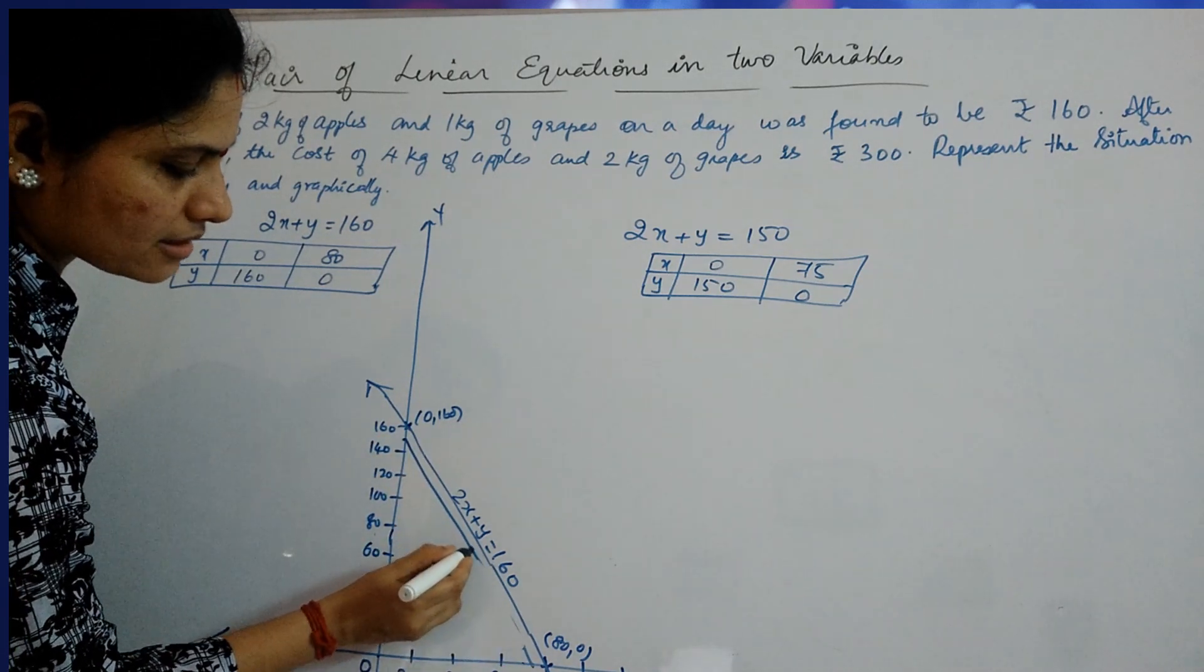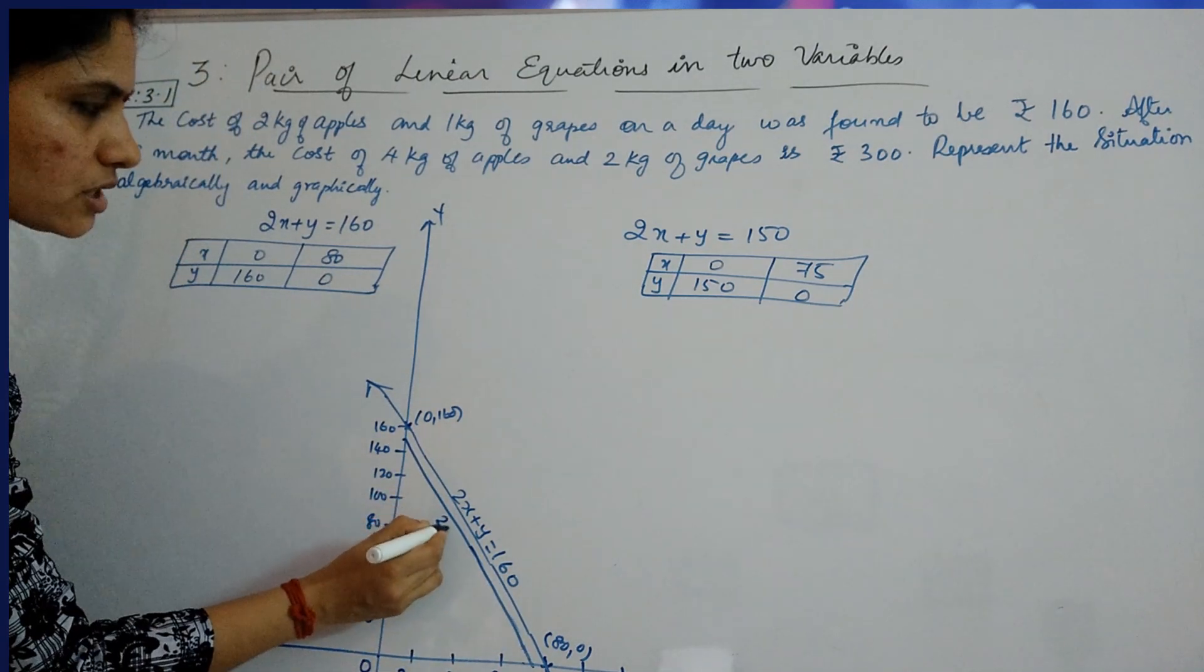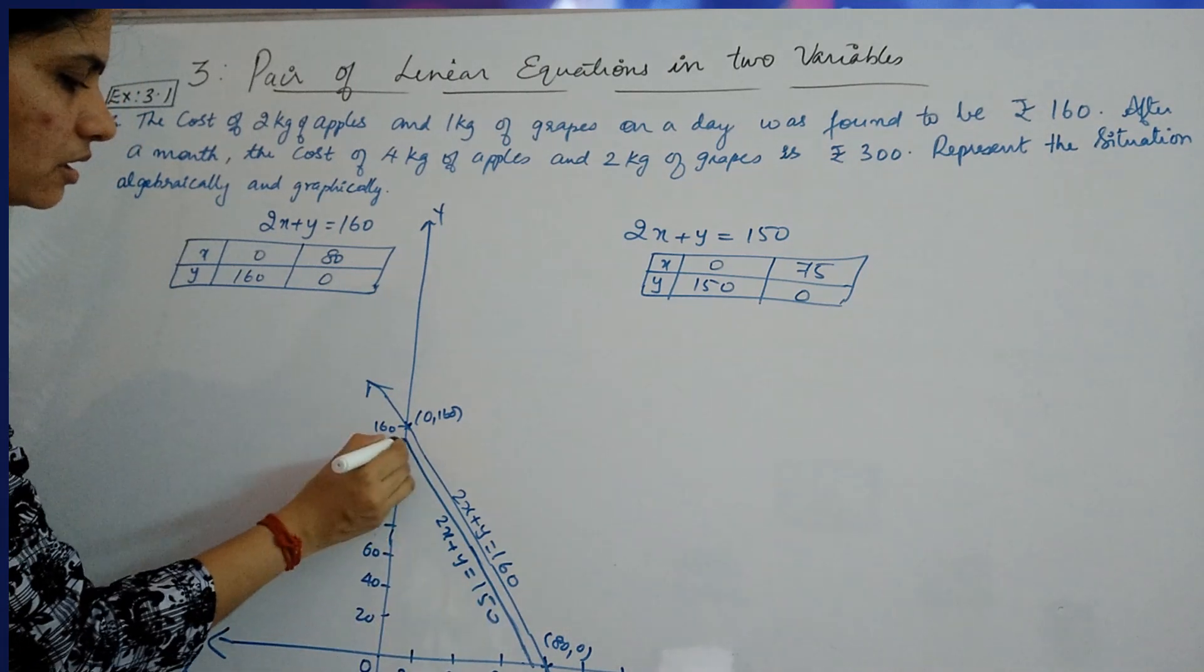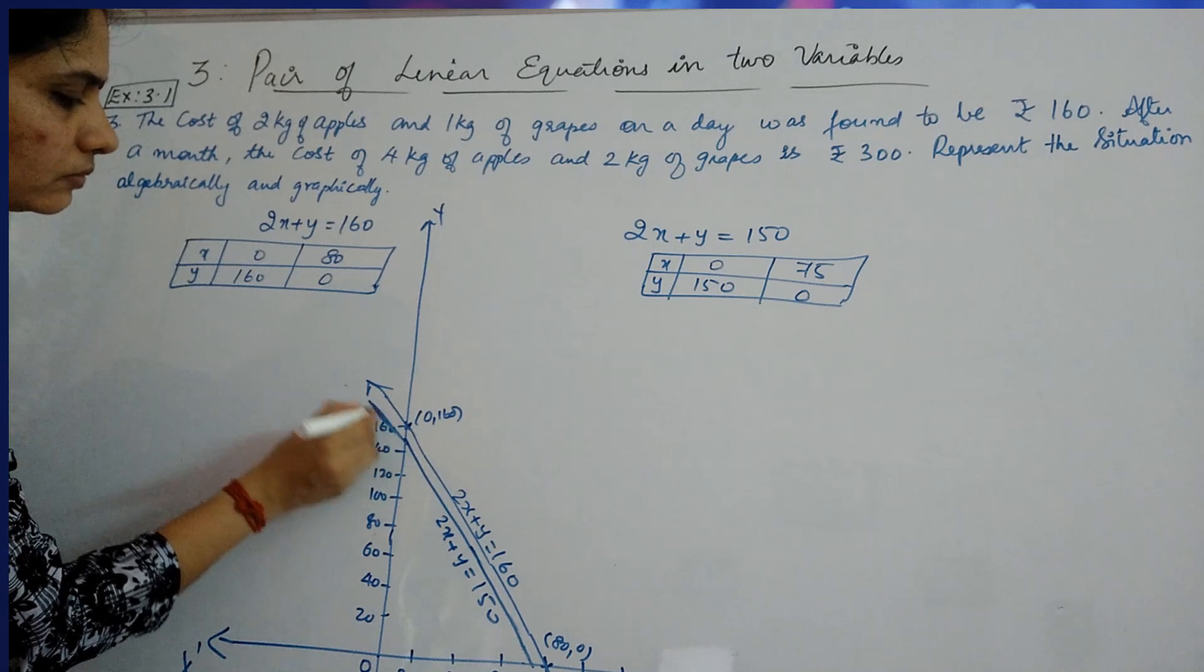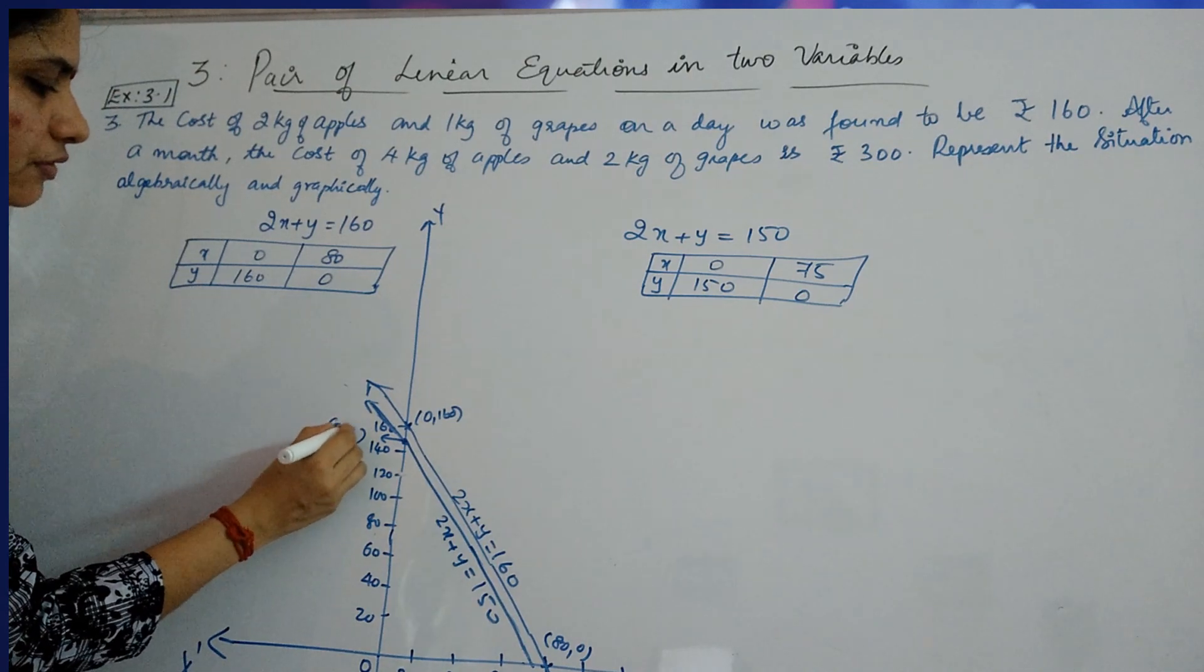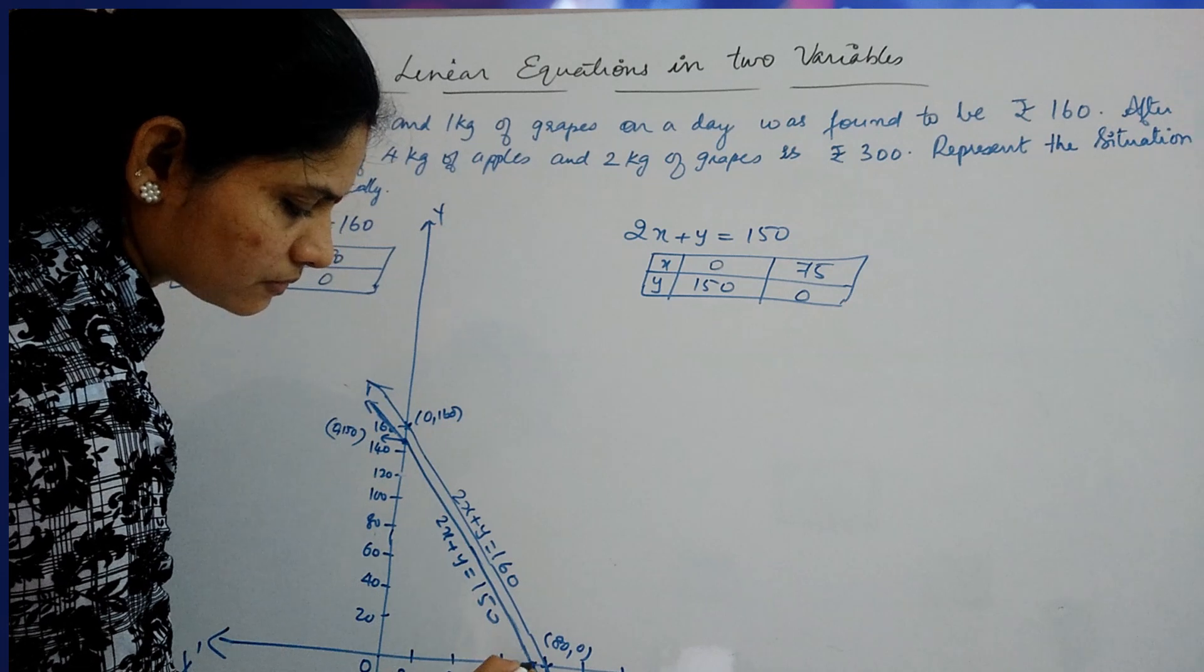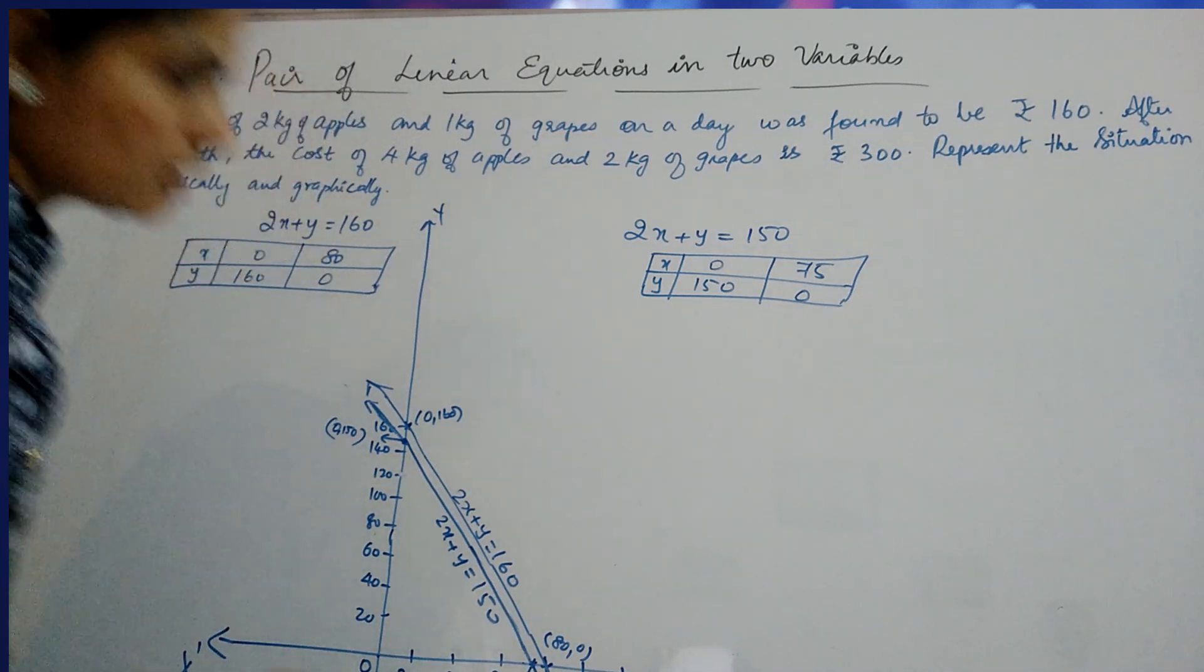You are actually getting two parallel lines. That means this will not have any solution. Anyway, you just write the equation here. This is your, this point is your 0, 150. And the point here after is 75, 0.